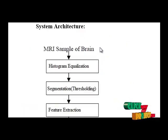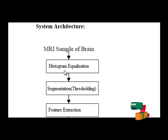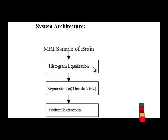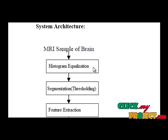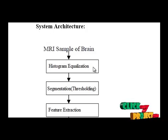This is the flow of our process. First we load our input MRI brain image. Then we pass our input image to be enhanced with the help of histogram equalization technique. Histogram equalization is a method in image processing for contrast adjustment using the image's histogram. This method usually increases the global contrast of many images, especially when the usable data of the image is represented by close contrast values.